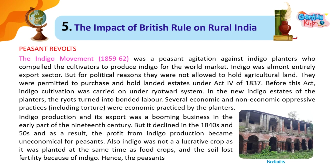Several economic and non-economic oppressive practices, including torture, were practiced by the planters. Indigo production and its export was a booming business in the early part of the 19th century, but it declined in the 1840s and 50s. As a result, the profit from indigo production became uneconomical for peasants. Also, indigo was not a lucrative crop as it was planted at the same time as food crops and the soil lost fertility because of it.